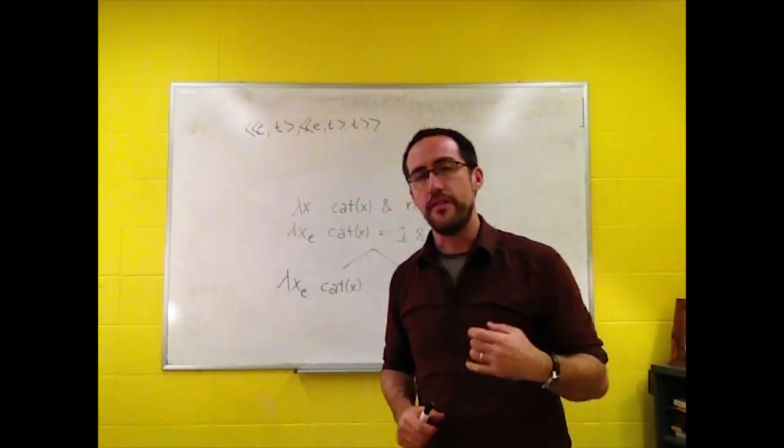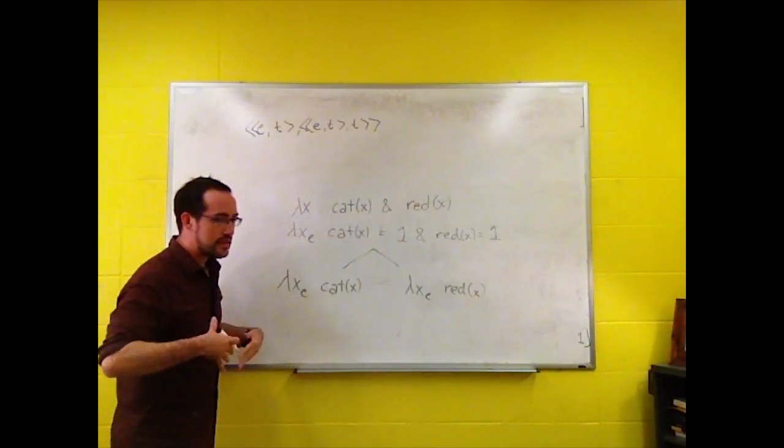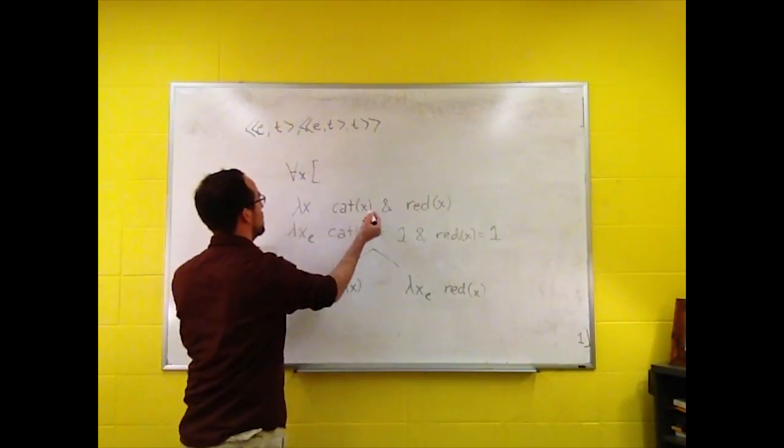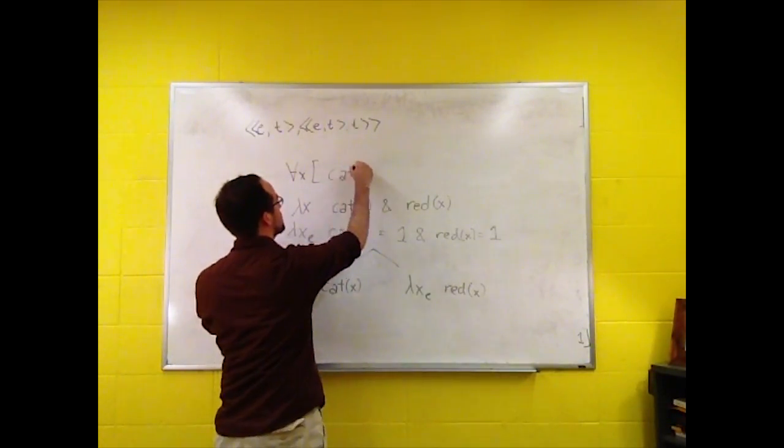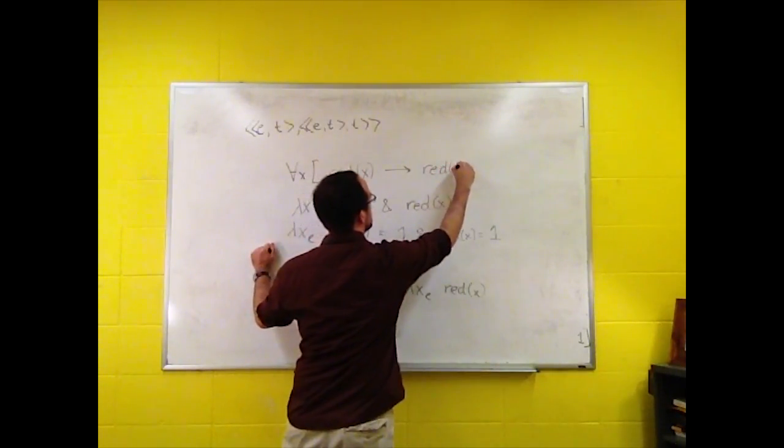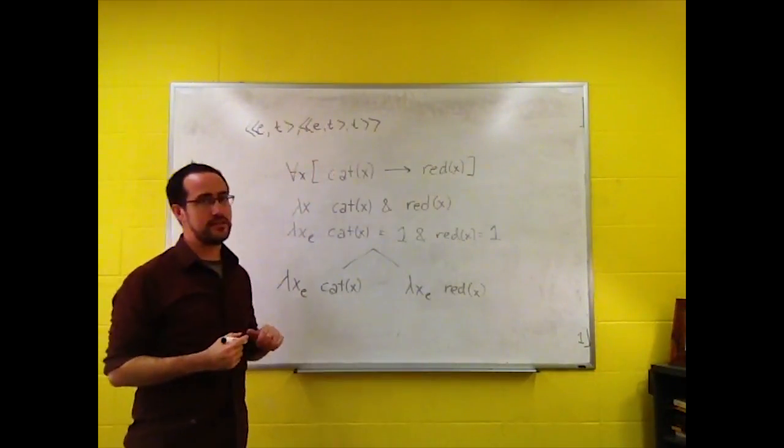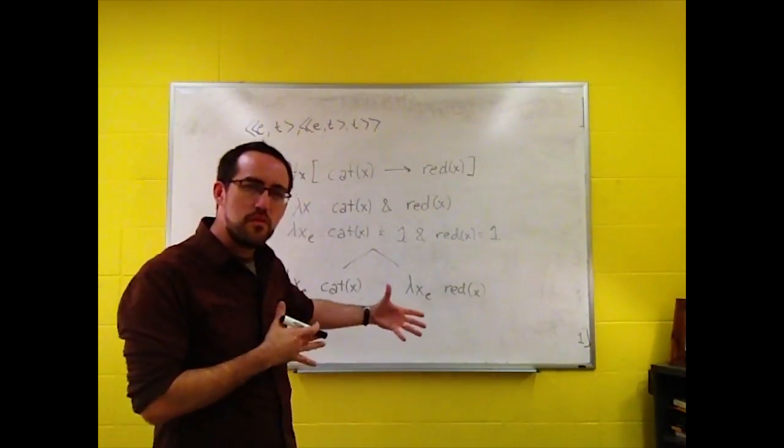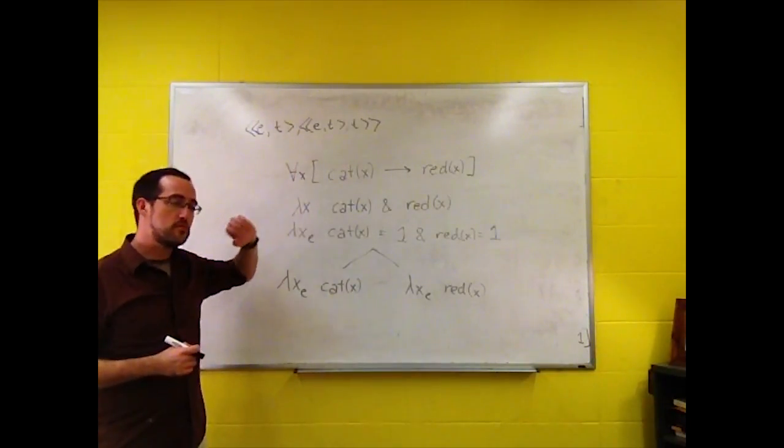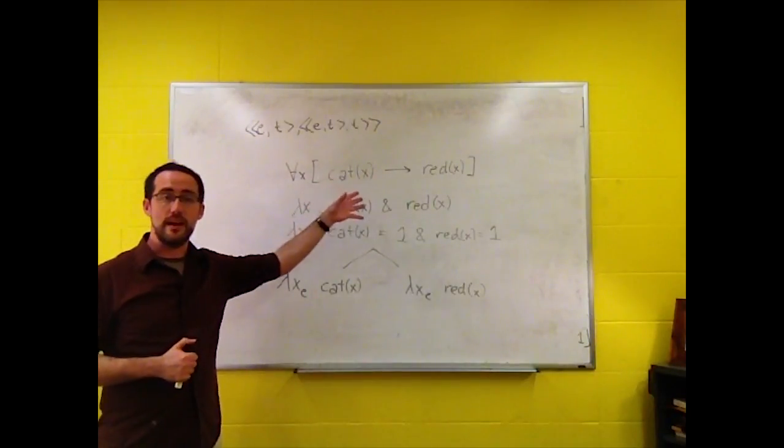And this works for quantifiers as well. So, when we say every cat is red, we don't necessarily write cat of X equals one. We just write cat of X, and red of, if cat of X, then red of X. And this actually matches the predicate logic form a little bit more closely. But, again, we have to switch what this abbreviation means. But everyone does that.